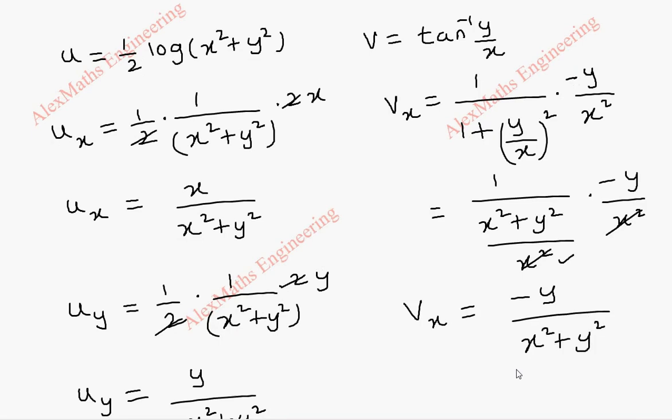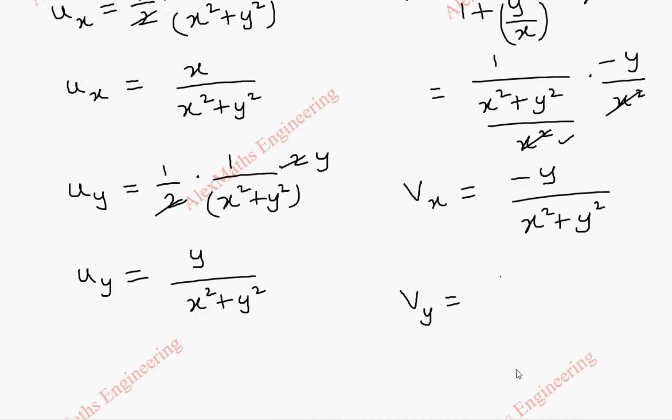In the same way, when we find v_y, tan inverse derivative is 1 by 1 plus y by x whole square. Now, x is constant. So, y derivative is 1 and the constant 1 by x stays as it is.